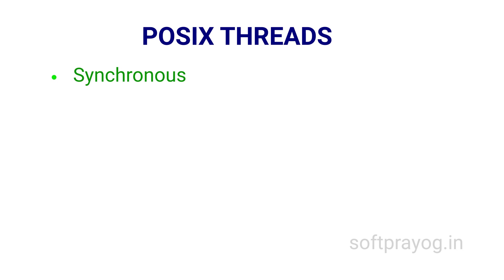Before we get to the pthreads API, let us look at some underlying concepts. The first is synchronous mode of operation. Synchronous comes from 'syn' and 'chronos' — 'syn' means together and 'chronos' means time. So synchronous means happening at the same time. In our context it implies blocking or waiting for the current operation to complete before doing something else. For example, a read call from a pipe or socket might block for lack of data.